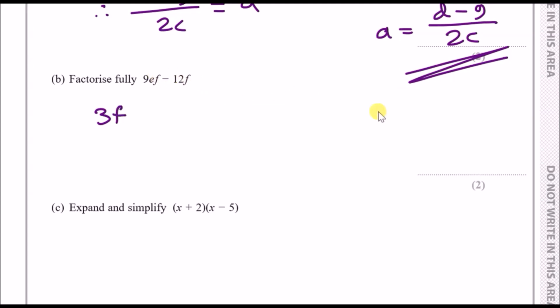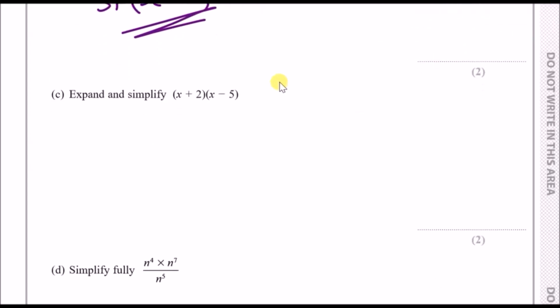We look at the letters, well they both have an f so we can take out f as well. Then we ask ourselves what is 9ef divided by 3f? Well 9 divided by 3 is 3, you still have an e and f divided by f cancels out. Then we write a minus sign.